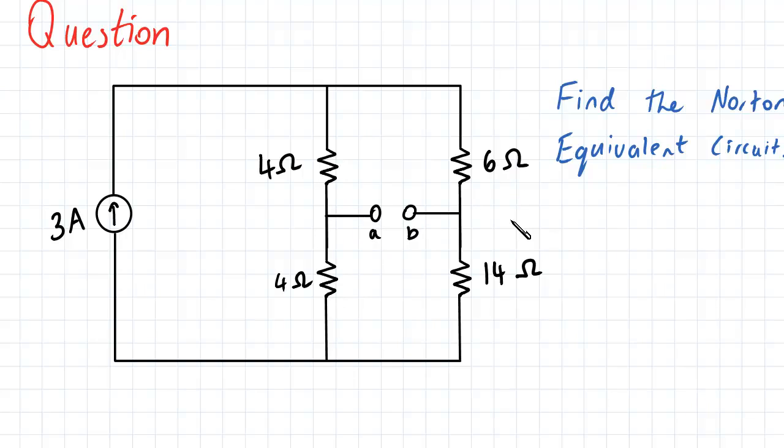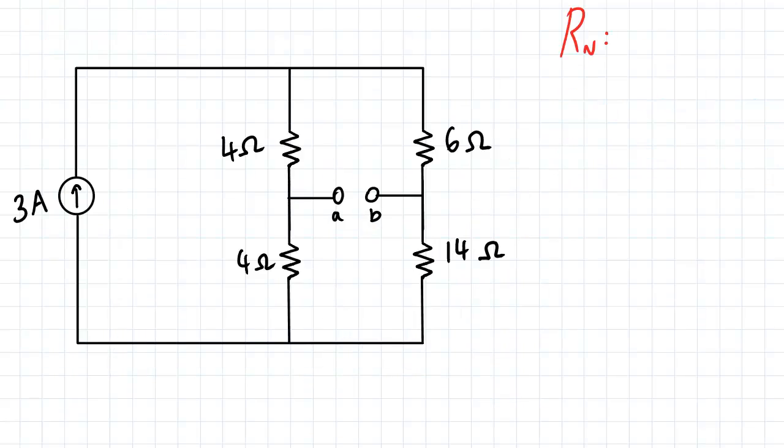So in order to begin, let us find our Norton resistance. To find our Norton resistance, what we need to do is we need to eliminate all the independent power sources.